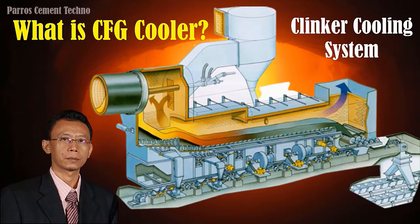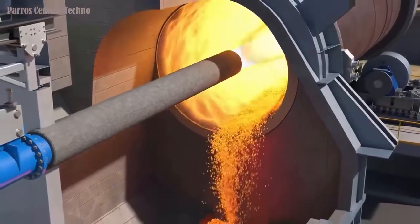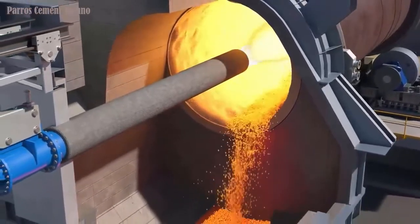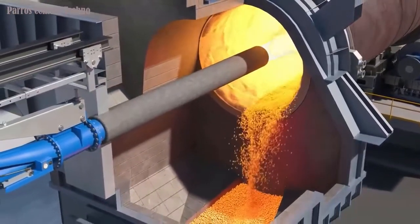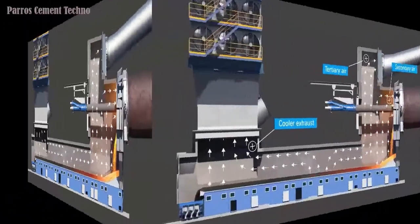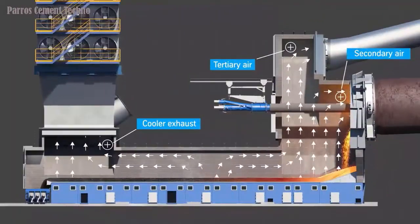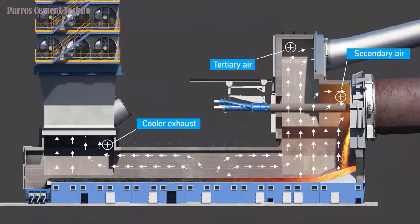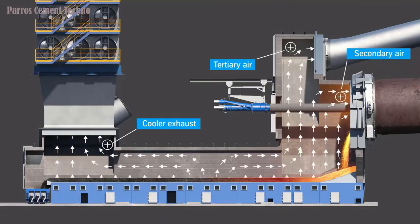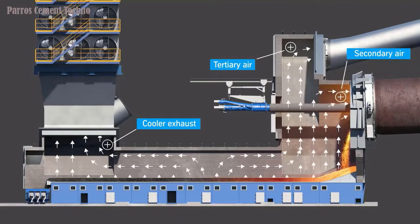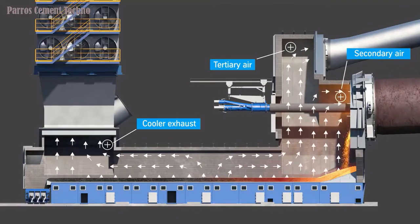Hello everyone, I hope you are all in good health and well. Still with me on the Peros Cement Techno channel. On this occasion I will explain about the clinker cooling system, the type of CFG cooler or Control Flow Grate cooler, which is used in the clinker production process in the cement plant.